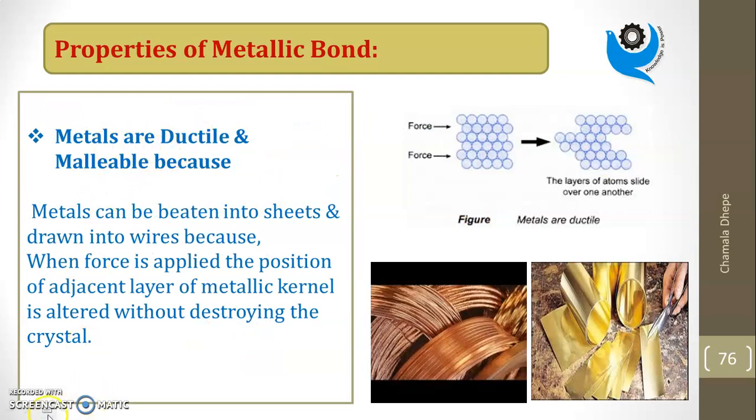Third property: metals are ductile and malleable. Ductile means we can draw wires from that metal. Malleable means it can be hammered into sheets. For example, if I have a gold biscuit, by hammering I can convert it into thin sheets. You can draw wires from metals, and by hammering they can be converted into sheets.